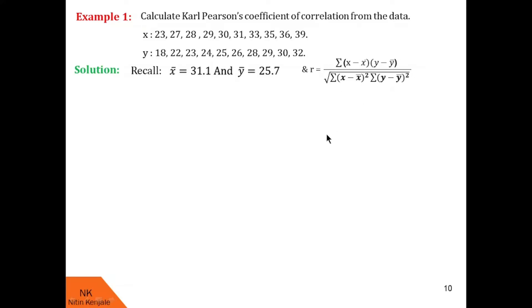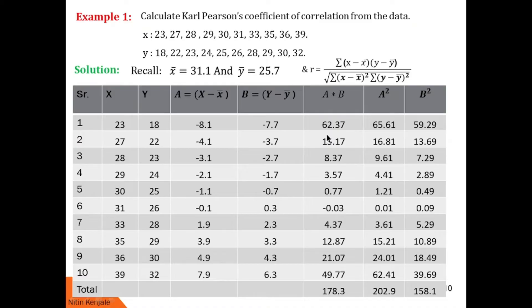To calculate all these values, we prepare a calculation table. The column headings are: serial number, x values, y values, then A which is x minus x bar, then B which is y minus y bar, then A into B which is x minus x bar into y minus y bar (the numerator term), then A square which is x minus x bar square, and finally B square which is y minus y bar square.